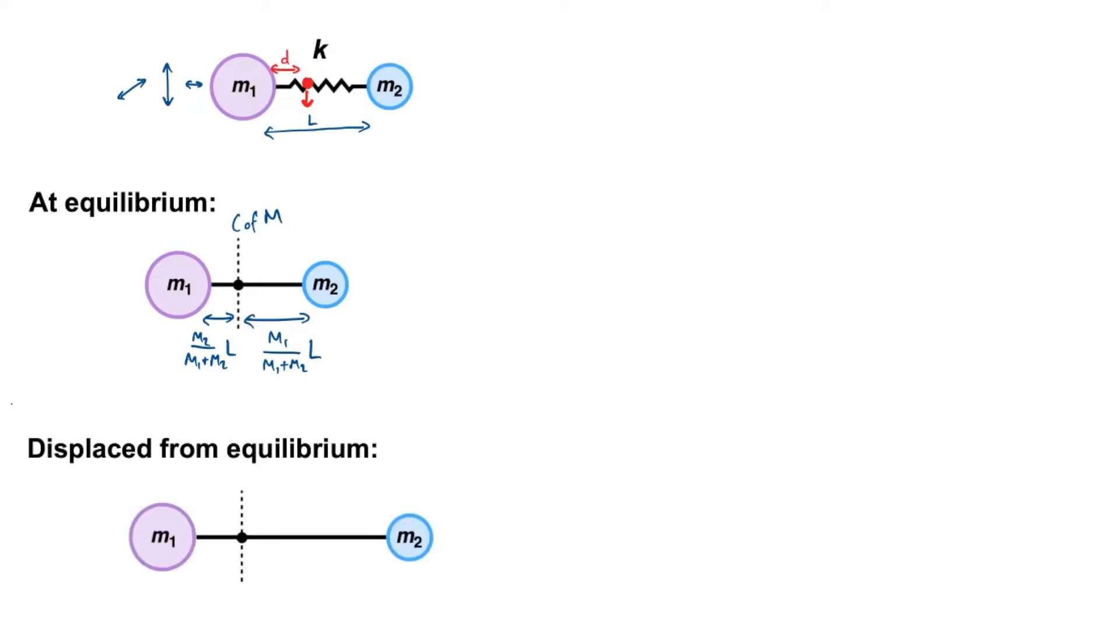So I'm now going to stretch my spring and extend it to a distance l plus x, where x is the extension of the spring. But in the case where the centre of mass is staying where it is, the ratios should be the same for the distances on either side. So this distance will still be the ratio m1 over m1 plus m2 times by l plus x, and the one on the left again will be the smaller one, m2 over m1 plus m2, l plus x.